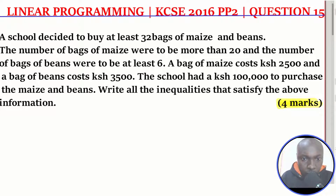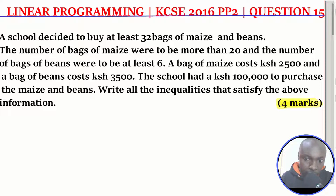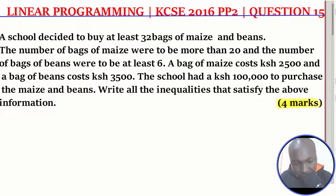The question reads: the school had 100,000 shillings to purchase maize and beans. Write all the inequalities that satisfy the above information. You need to read that statement very carefully and then form the inequalities. Let us go to the first statement: the school decided to buy at least 32 bags.